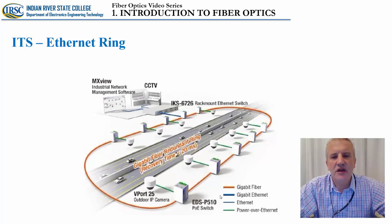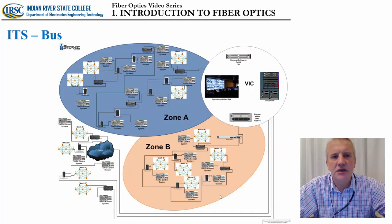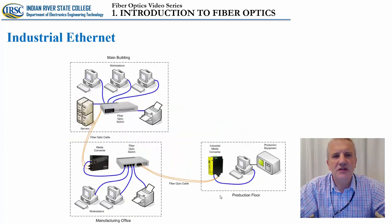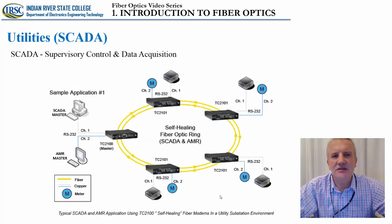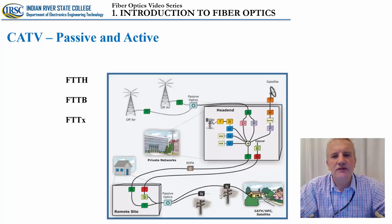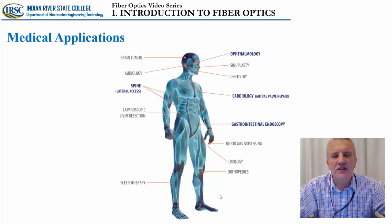Here we have an example of an Ethernet ring where different video cameras in the city have been connected using optical fibers. There's also a bus configuration of a specific network, and Ethernet connecting many different end users and devices. Certain networks are applied in industry — industrial internet. There are SCADA systems where optical fibers are used for supervisory control and data acquisition, wireless towers connected using optical fibers, fiber to the home, fiber to the building, the more generic FTTX, and medical applications.